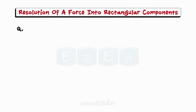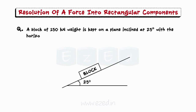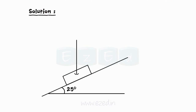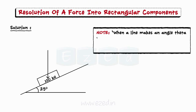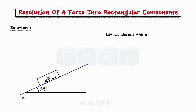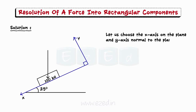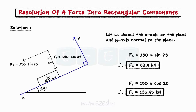Now consider this problem: a block of 150 kN is kept on an inclined plane at 25 degrees, and we have to resolve its weight force into two components. The block's weight acts vertically downward. Note that when a line makes an angle theta with the horizontal, any line perpendicular to it makes the same angle theta with the vertical. In such a situation, we consider the x-axis to be on the inclined plane and the y-axis normal to it. On solving, Fx equals 63.4 kN and Fy equals 135.95 kN.